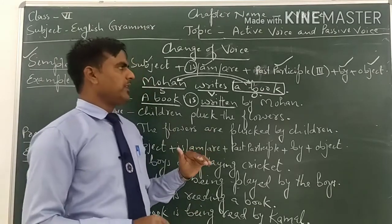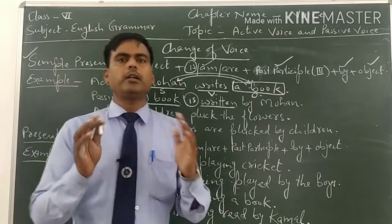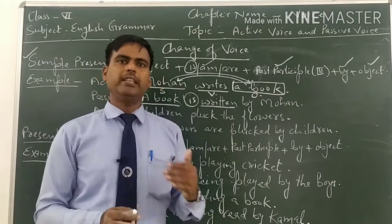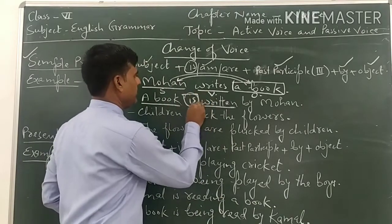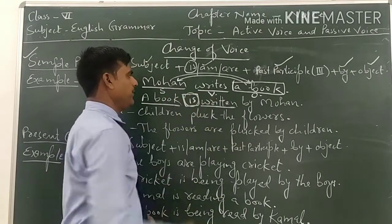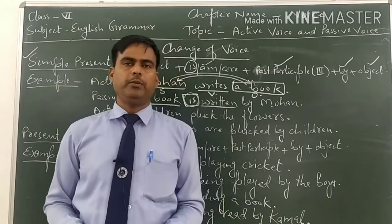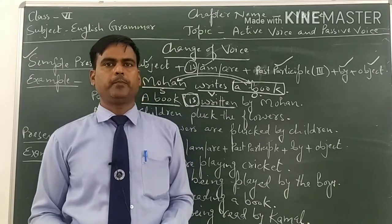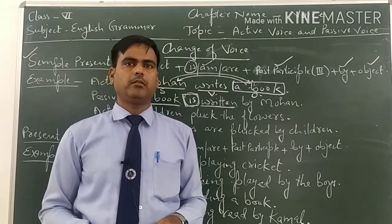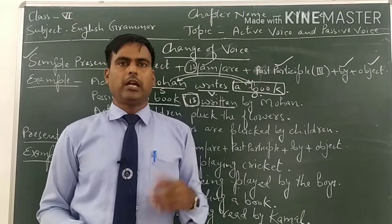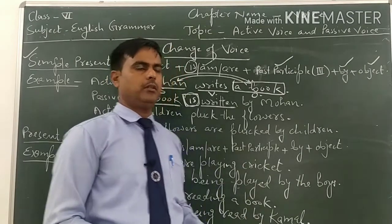Only one thing is different across tenses — the changing rule is otherwise the same. The difference will be in the helping verb only. For example: is/are, is/are being, was/were, have been, has been, etc. Only the helping verb will be different.